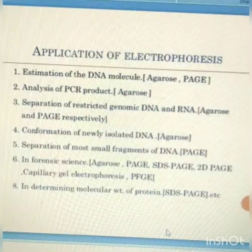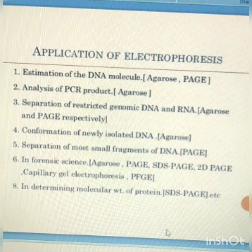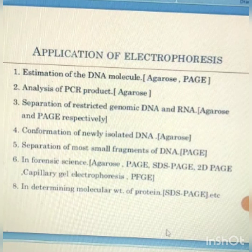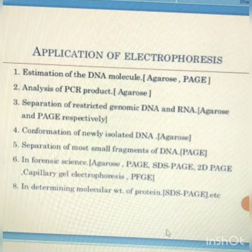The applications of electrophoresis include estimation of DNA molecules — gel electrophoresis can separate DNA molecules or DNA fragments of different lengths, using both agarose and PAGE. Analysis of PCR product, that is polymerase chain reaction product, is also an application. Separation of restricted genomic DNA and RNA is done using agarose and PAGE respectively. Confirmation of newly isolated DNA is done by agarose gel electrophoresis. Separation of most small fragments of DNA is done by PAGE because its resolution is high.